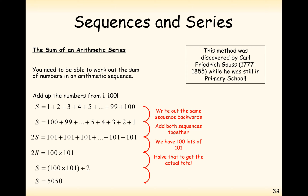This was discovered by Carl Friedrich Gauss while still in primary school. The story goes that his teacher, annoyed with Gauss answering everything, set him the puzzle of adding up 1 to 100. Gauss worked out a formula, and when the teacher said to try 1 to 1000, Gauss applied his formula and answered within seconds.